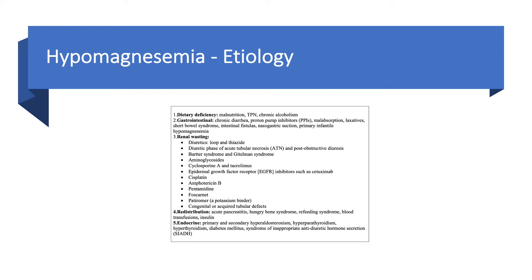Looking at the etiology of hypomagnesemia in more detail, there are five categories. Dietary: alcoholism, TPN, malnutrition. GI causes: chronic diarrhea, laxatives, malabsorption, proton pump inhibitors, fistula, short bowel syndrome, primary infantile hypomagnesemia, and nasogastric suction. Renal wasting is very common — any loop or thiazide diuretic will cause it, though spironolactone is potassium- and magnesium-sparing. Other renal causes include the diuretic phase of ATN, post-obstructive diuresis, Bartter and Gitelman syndromes, aminoglycosides, and cyclosporin A and tacrolimus used in transplant immunosuppression.